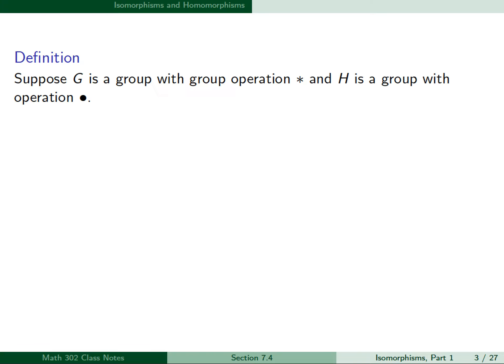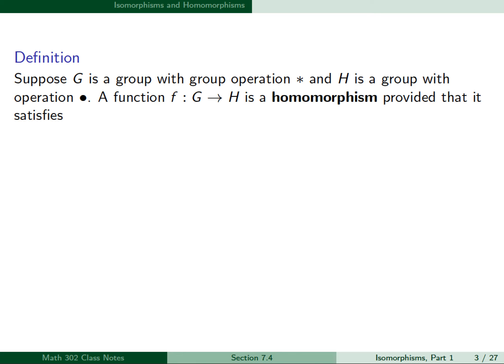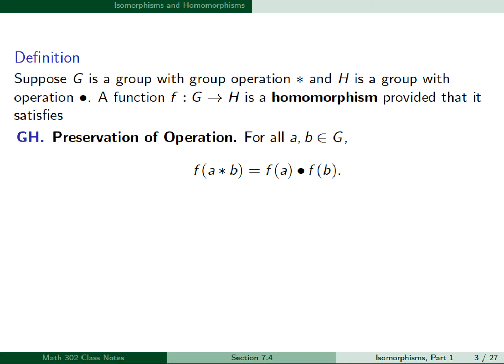We'll start by defining a group homomorphism. Suppose G is a group with group operation star, and H is a group with operation dot. The function f from G to H is a homomorphism provided that it satisfies the condition — preservation of operation: for all a and b in G, f(a ★ b) = f(a) · f(b).